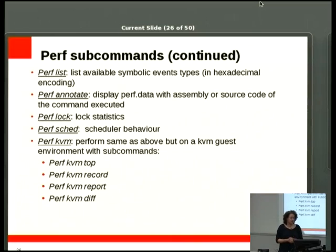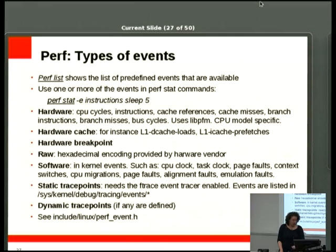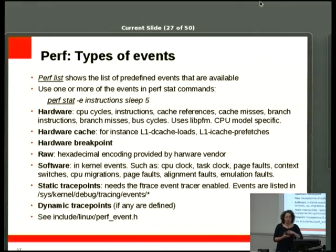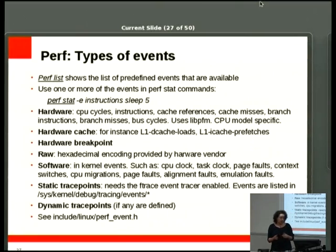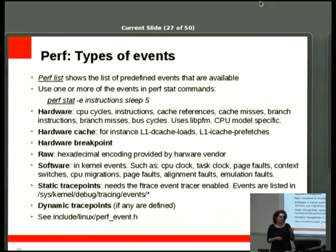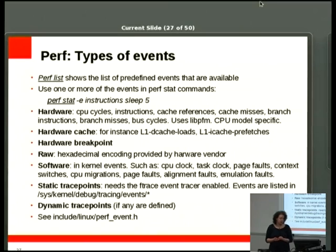Running 'perf list' shows available events. You can trace static kernel trace points, dynamic trace points you've defined yourself, and hardware counters and registers. All of this is defined in perf_event.h. You can narrow what perf is looking at by targeting a specific CPU, a specific process, or system-wide.